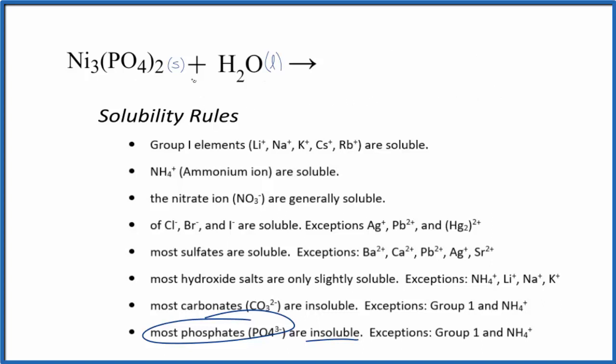Note that even though it's insoluble, a very tiny amount will dissolve. So we could write the equation for that tiny amount. We know that the phosphate ion is 3 minus, we have 2 of those, so the nickel has to be 2 plus.